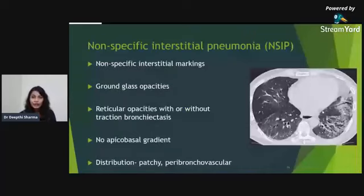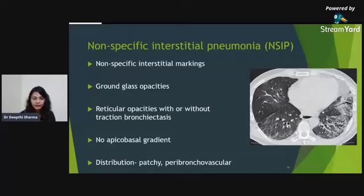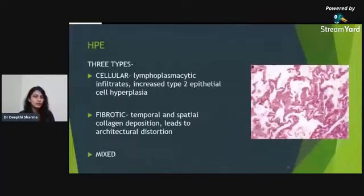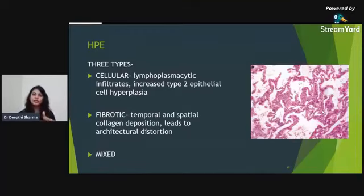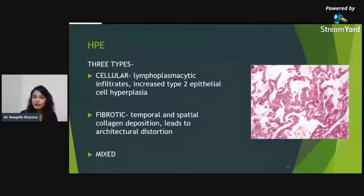NSIP shows non-specific interstitial markings on HRCT — predominantly ground glass opacity (attenuation with vessel markings still visible), reticular opacities with or without traction bronchiectasis, and patchy or peribronchovascular distribution without an apicobasal gradient. Histopathologically, NSIP has three types: cellular (lymphoplasmacytic infiltrates with increased type 2 epithelial cell hyperplasia), fibrotic (temporal and spatial collagen deposition causing architectural distortion — poorer prognosis), and mixed. Fibrotic NSIP tends to progress toward UIP with higher mortality.